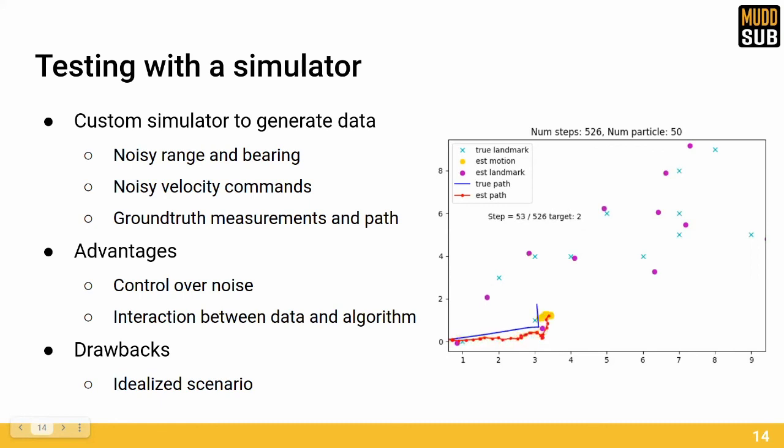Moreover, as shown on the top right corner, the landmark poses are corrected as the robot moves towards that region. This gives us confidence that our algorithm is performing well and will be extensible to competition.